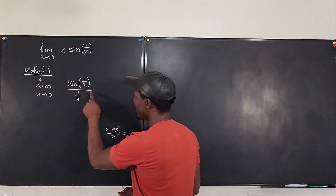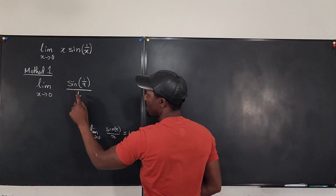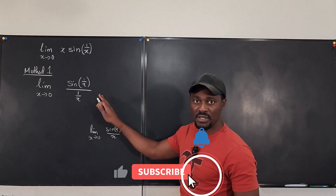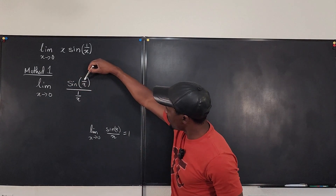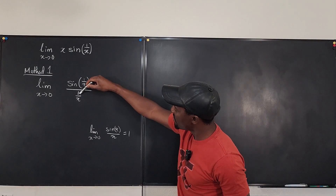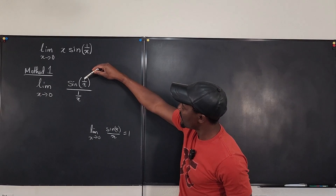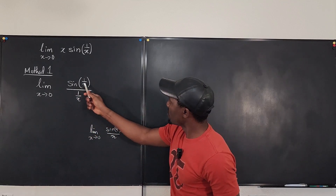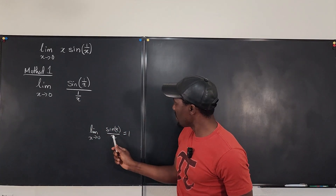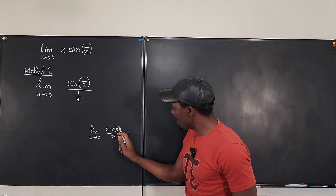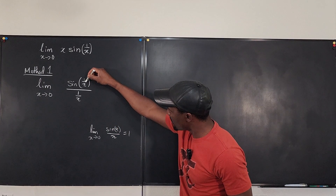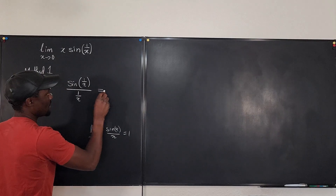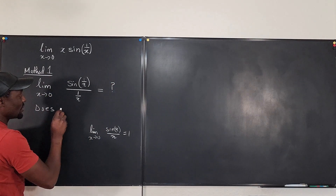This is exactly the original expression, because if you flip 1 over x back up, you have just one in the denominator. But does this help us? If x is still going to zero, 1 over x will be infinity — sine infinity over infinity — and that's still not defined. For the trig identity sine x over x to apply, x has to go to zero, not infinity. So this does not work — clearly, algebraic manipulation does not work.